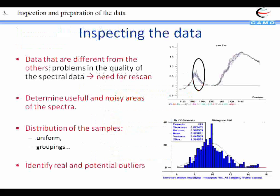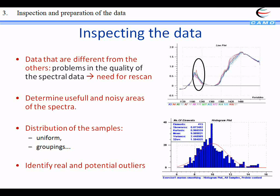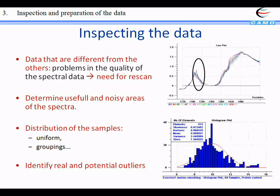So now let's look at the spectra. Once you have collected your spectra and you want to start the analysis, the first thing to do is to inspect the data. The basic first step is to look at them as raw spectra and to detect any abnormality — maybe some baseline that is not good, a peak that is spurious, or noisy spectra.